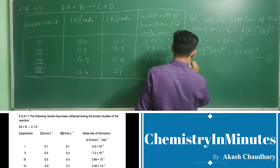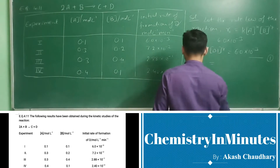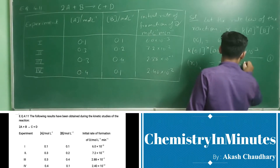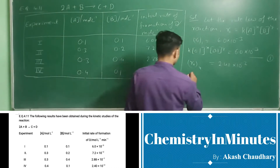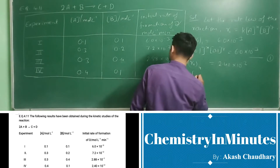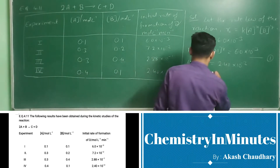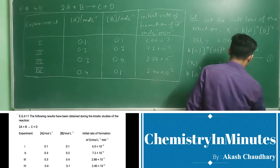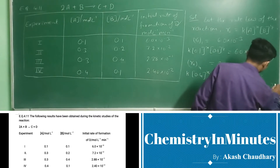Now for experiment 4, the rate of reaction is given as 2.40 × 10⁻². Putting the values of concentration in the rate law, we get k(0.4)^x (0.1)^y = 2.40 × 10⁻². This will be our equation number 2.